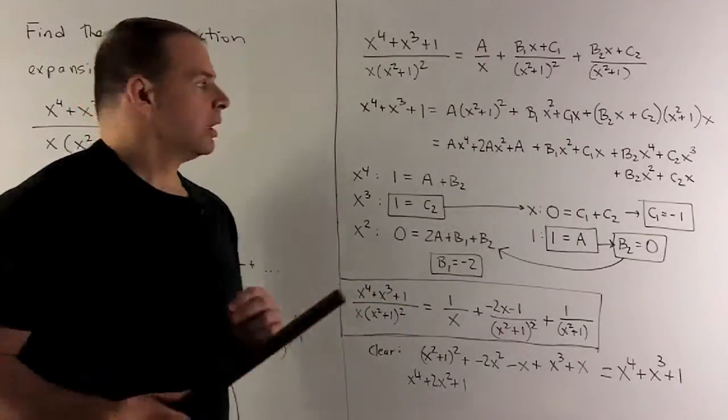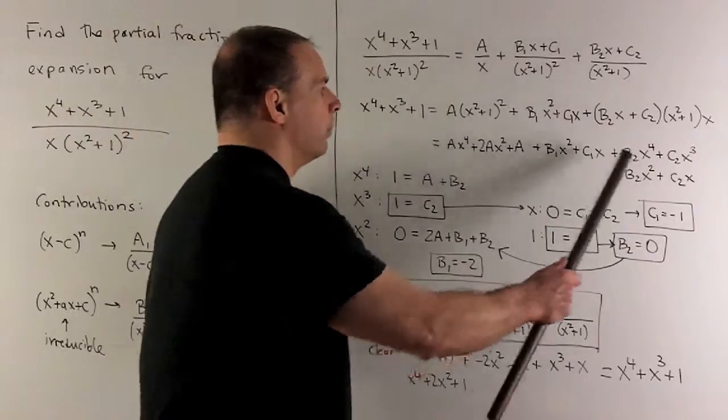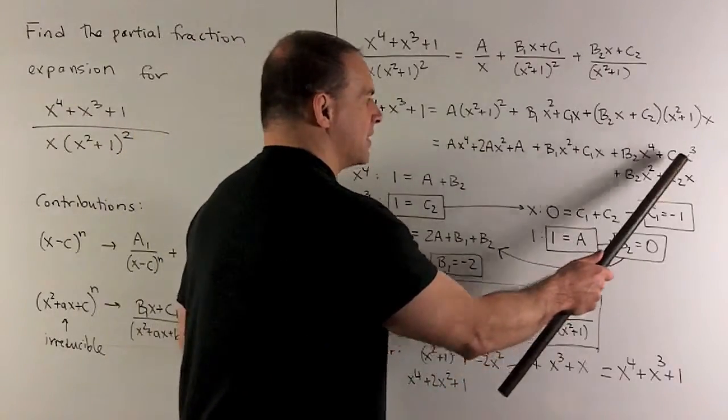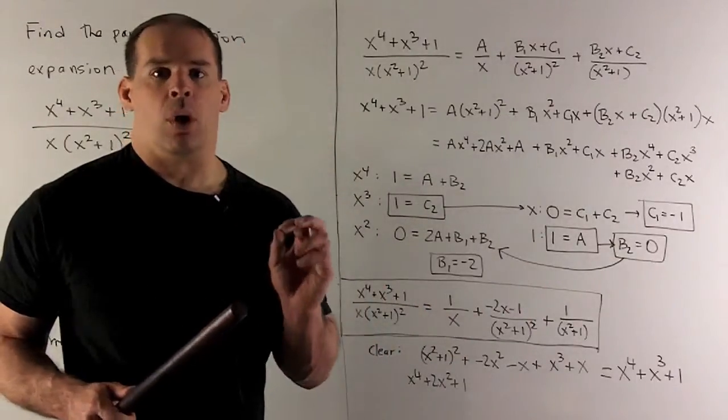For x cubed, on this side, I have a 1. I go through. Over here, we'll only have a c2. So we get c2 is equal to 1.